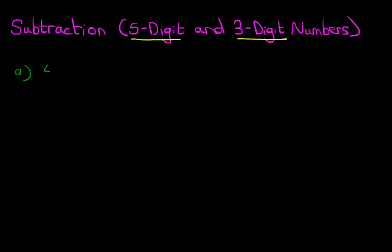What is 47,382 minus 248? Now, do you notice that when we were subtracting five-digit numbers and one digit it was very simple? There was no real need to even do the vertical format.